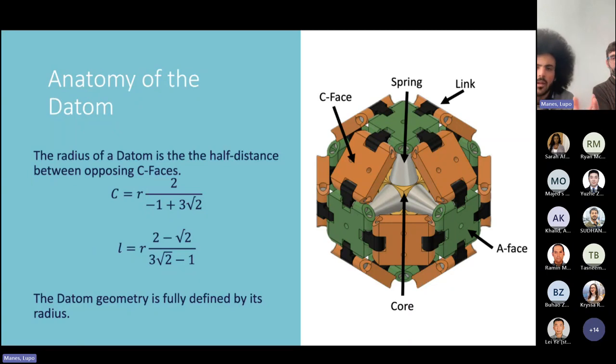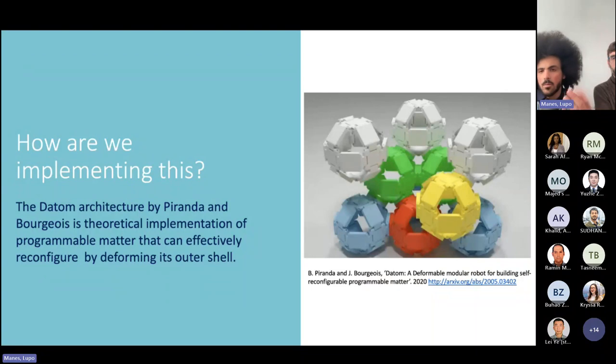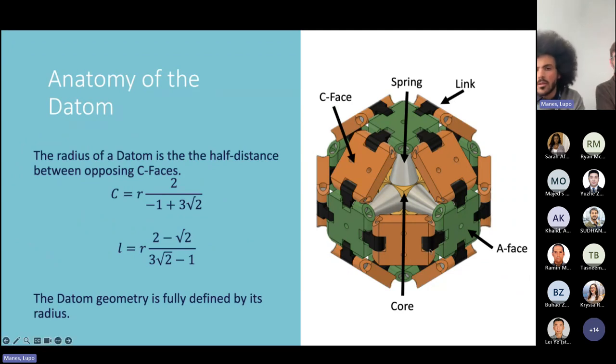Before we go any further, I want to make sure that I introduce the datum properly. A datum has the shape of an edge truncated square, so basically beveled the edges of a square. There are five main components to the datum. We have the C face, the connector phase, which is the phase on which the datums connect. There are the actuator faces, which are going to move up and down. These two are connected by a link, and then to actuate the entire device, we have six independent shape memory alloy springs that can be controlled to have two different resting layers, either fully extended or fully retracted.